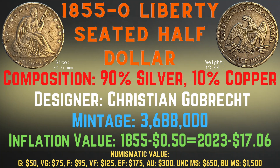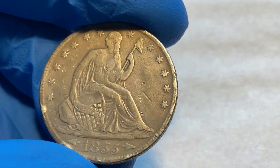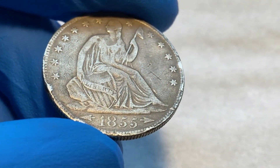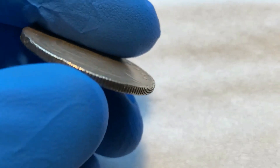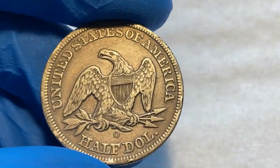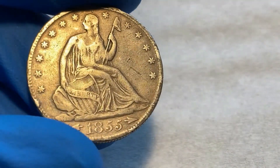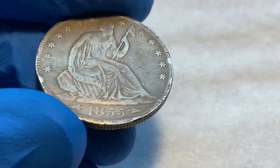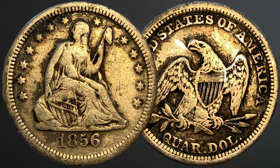Now let's take a closer look at the 1855 New Orleans Liberty Seated half dollar from my collection. This coin appears to be in very good shape with a nice luster. The details are very clear — Liberty, the shield, the edge reeding, and the eagle on the back are all prominent. The background behind the eagle is very clean. There is some slight wear on the high spots, but the majority of the details are quite clear. I would grade this coin in extremely fine condition.